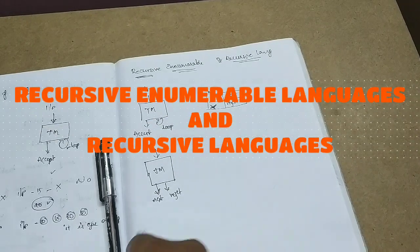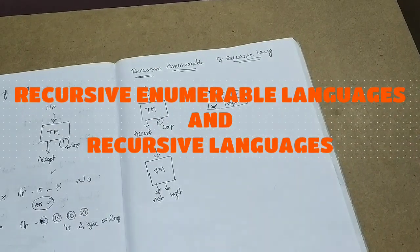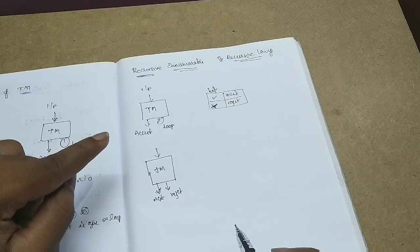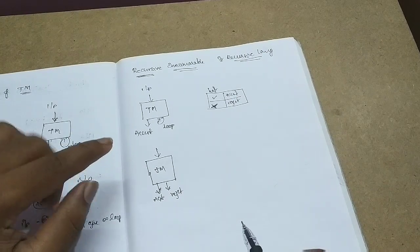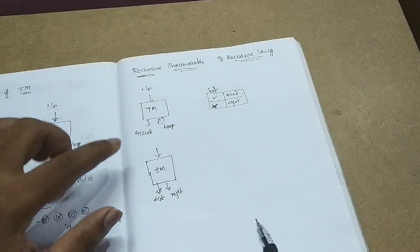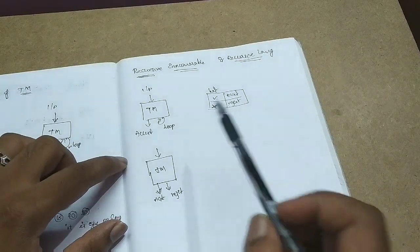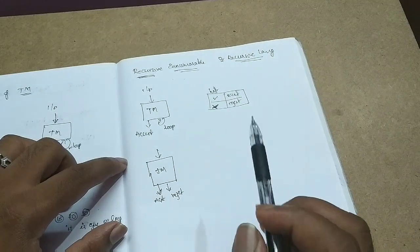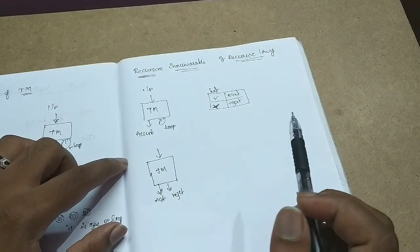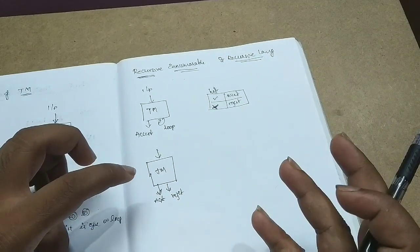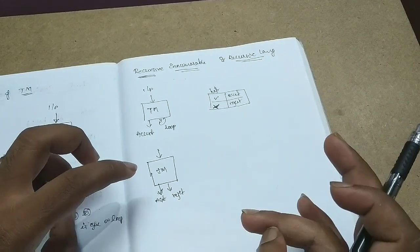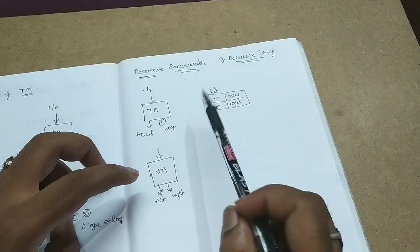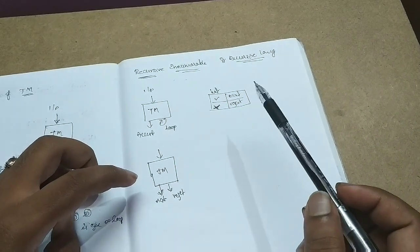Hi friends, welcome back. This is Rashikar. Today in this class we are going to discuss about recursive languages and recursive enumerable languages, context-free languages. These are another kind of formal languages.